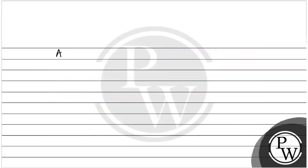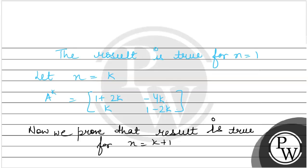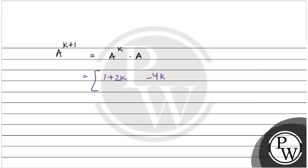So A^(K+1) = A^K × A. A^K is given as [1+2K, -4K; K, 1-2K], and A is given as [3, -4; 1, -1]. Now we follow the matrix multiplication concept according to key concept 2 and multiply these matrices.